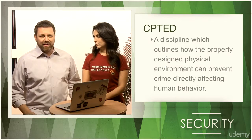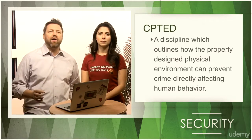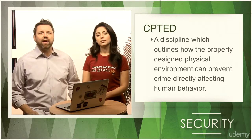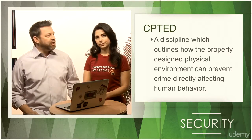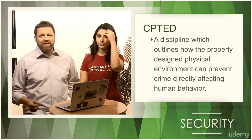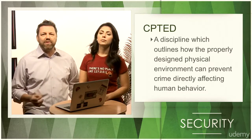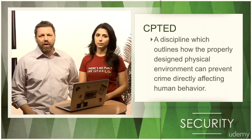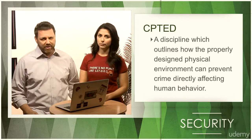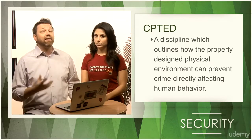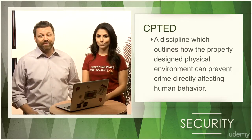Crime Prevention Through Environmental Design, or CPTED, is a discipline which outlines how the properly designed physical environment can prevent crime by directly affecting human behavior. This guides us in loss and crime prevention by proper facility construction and environmental components and procedures. This encompasses the physical, social, and psychological needs of the users.